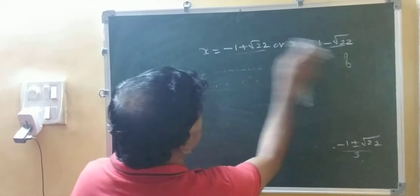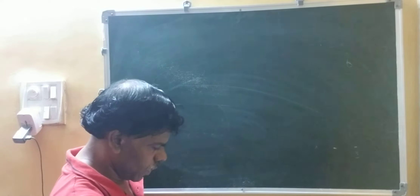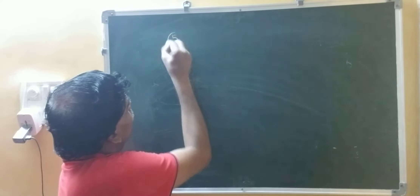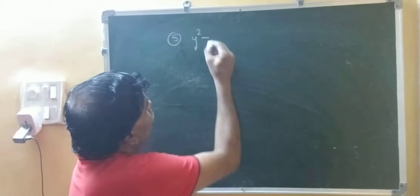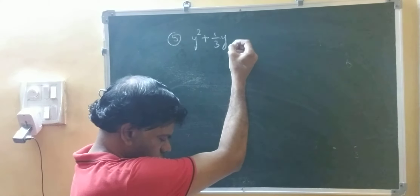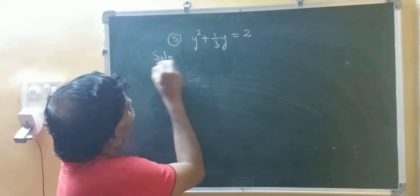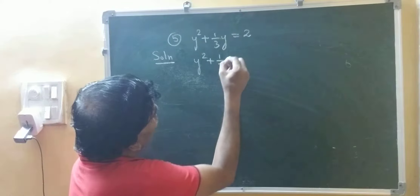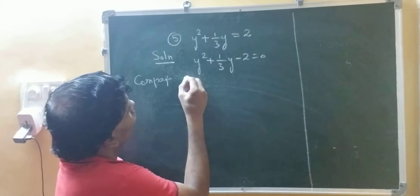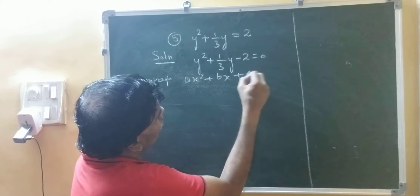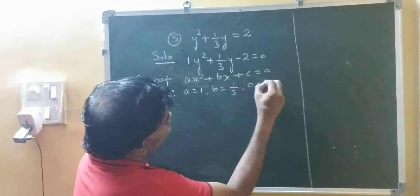Next sum we will do — the fifth one: y squared plus 1 by 3 y equals 2. You have to write it in standard form: y squared plus 1 by 3 y minus 2 equals 0. Comparing with ax squared plus bx plus c equals 0, we get a equal to 1, b equal to 1 by 3, c equal to minus 2.